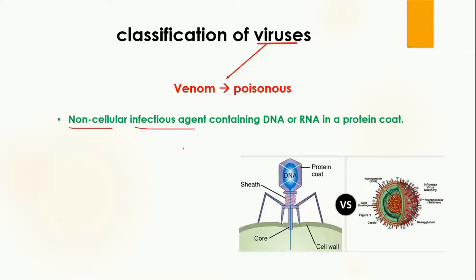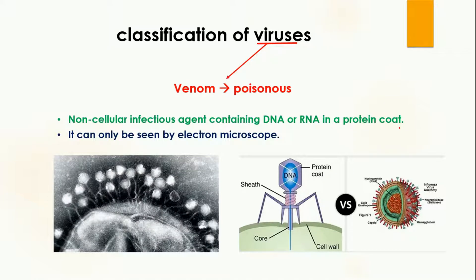Viruses contain DNA or RNA which is protected by a protein coat. They are extremely small and can only be seen by the electron microscope. In this diagram you can see these structures, which are actually bacteriophages. This is the image of viruses or bacteriophage under the electron microscope.